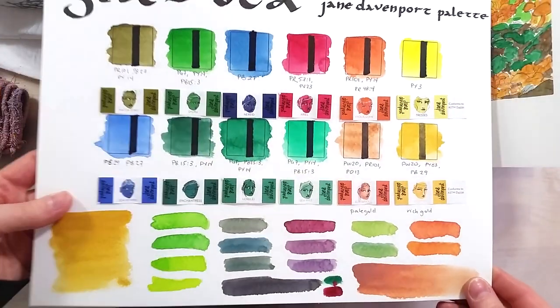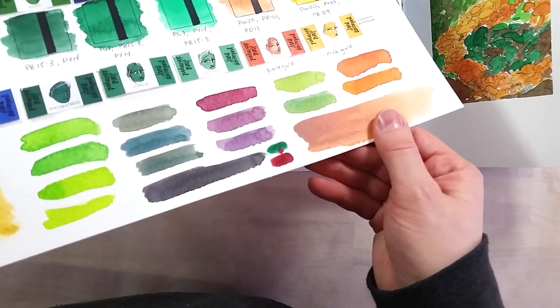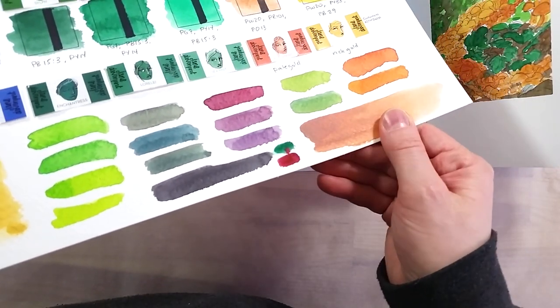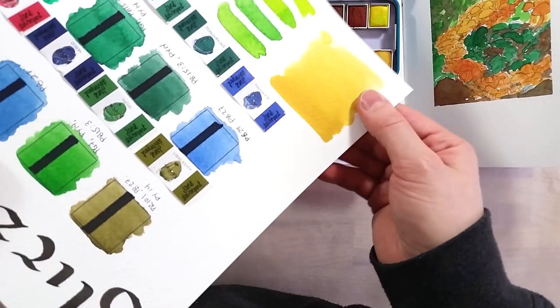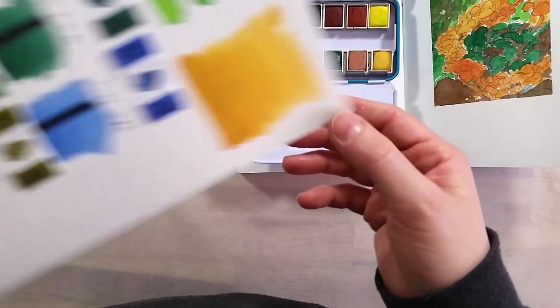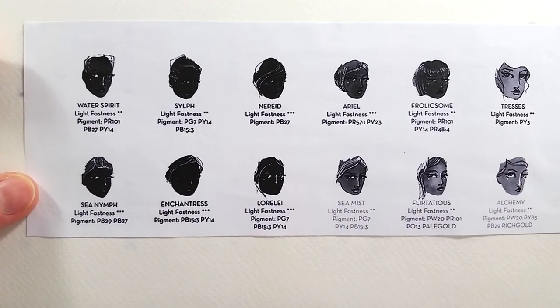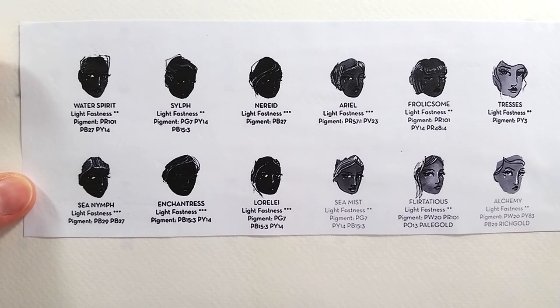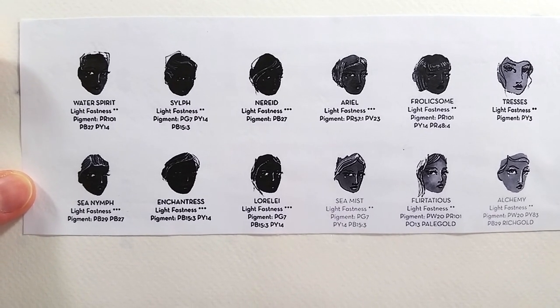On Jane Davenport's website, you can find pigment information for these paints, including lightfastness ratings. Overall, these 12 paints use 13 pigments, and only two colors are single pigment paints. The lightfastness of these paints are either 2 or 3 stars, where 3 stars is the best lightfastness rating applicable.